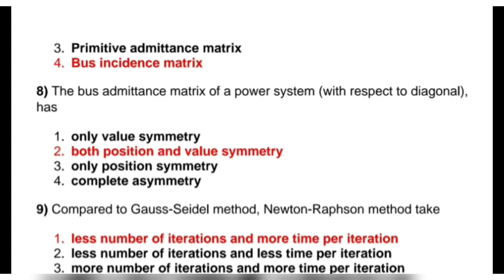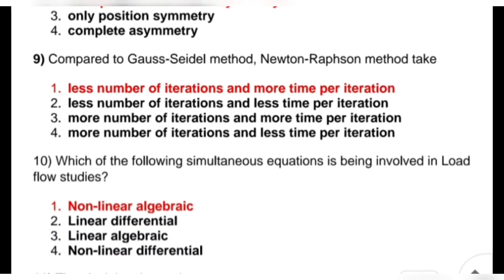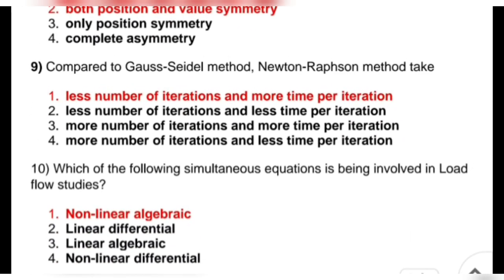Next question is: compared to the Gauss-Seidel method, Newton-Raphson method takes — options are less number of iterations and more time per iteration, less number of iterations and less time per iteration, or more number of iterations and more time per iteration.